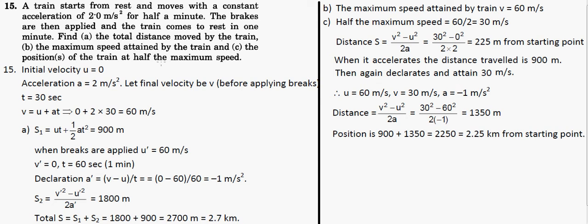Let's see question number 15. A train starts from rest, so the initial velocity is zero. It moves with constant acceleration for half a minute, so time is 30 seconds. The brakes are then applied and the train comes to rest in one minute, so that time is 60 seconds. Let me explain it one by one.